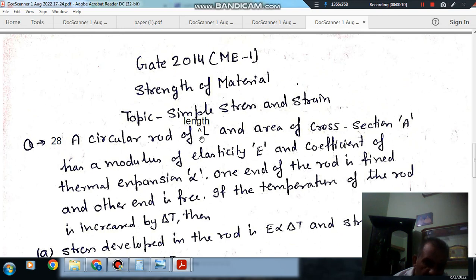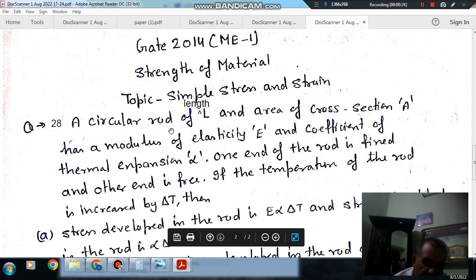A circular rod of length L and area of cross-section A has a modulus of elasticity E and coefficient of thermal expansion alpha. One end of the rod is fixed and the other end is free. If the temperature of the rod is increased by delta T,